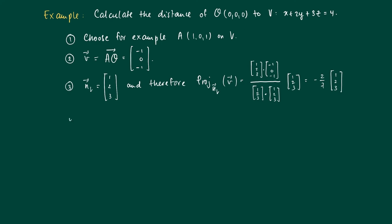So we may conclude that the distance from the origin to the plane V is simply the length of this projected vector. It's the norm of the vector -2/7(1,2,3), which equals 2/7 times the length of (1,2,3), which equals 2/7 times the square root of 1+4+9, which equals 2/7 times the square root of 14.